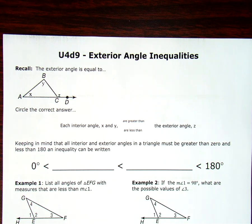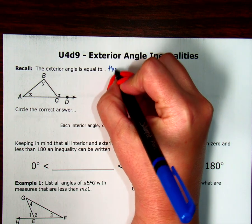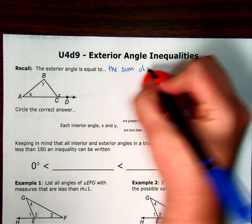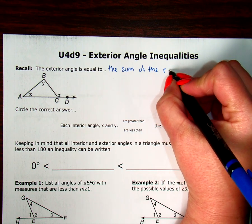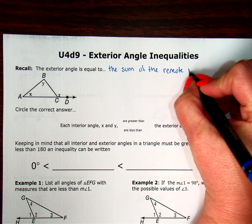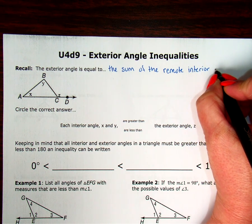Hi, today we are in unit 4, the 9th day, and we're looking at exterior angle inequalities. Remember, we already looked at exterior angles and we said they are equal to the sum of the remote interior angles.